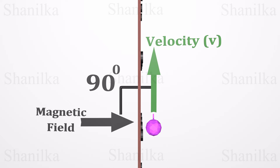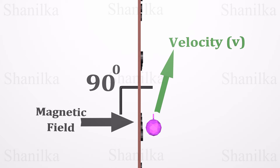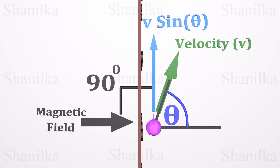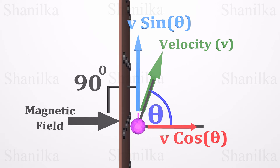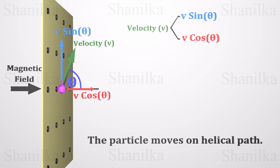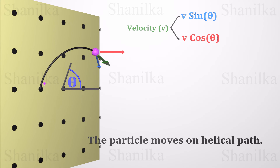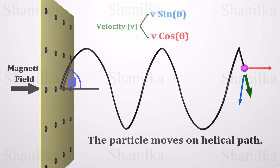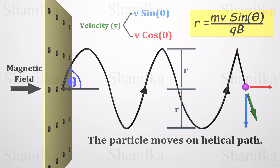Now imagine that instead of a perpendicular velocity, a particle enters at angle theta with the magnetic field. To calculate the force and radius, we find the velocity component perpendicular to the field, which is v sin θ. Since the v cos θ component is parallel to the field, it is not affected by the magnetic field. The particle therefore moves on a helical path, and the radius of that path equals m times v sin θ divided by q times B.